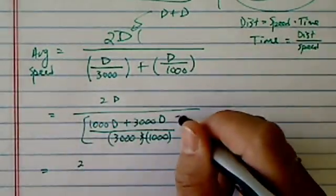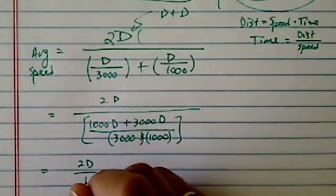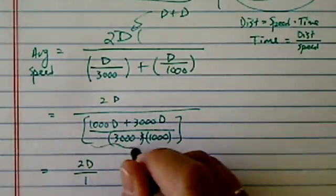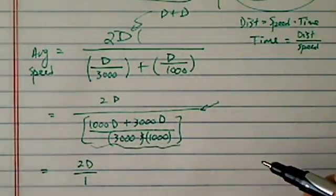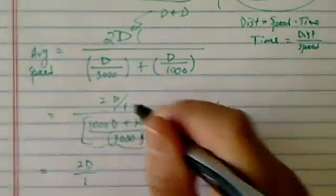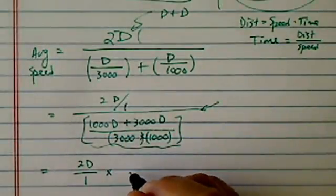Let's try that. So here, I have 2d divided by 1. I'm going to flip the bottom here because this is a compound fraction. I have a fraction divided by another fraction, so I'm going to multiply the reciprocal.